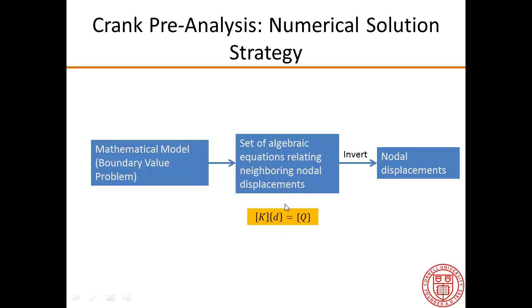Conventionally, the set of algebraic equations is written as this KD equals Q or some variation of that notation. And so each row of D is going to relate one component of the nodal displacement to the neighboring nodal displacements. And then once ANSYS forms that system, it inverts it to determine what the nodal displacements are and everything else is constructed from the nodal displacements through the post-processing step.